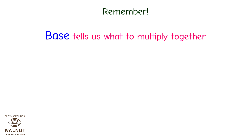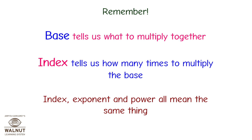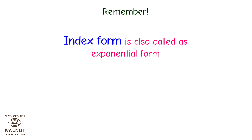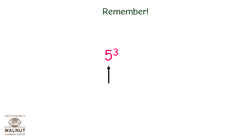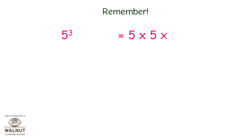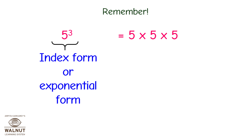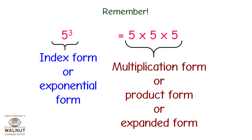Remember: base tells us what to multiply together; index tells us how many times to multiply the base. Index, exponent, and power all mean the same thing. Index form is also called exponential form. Multiplication form is also called product form or expanded form. For example, 5 raised to 3: 5 is the base, 3 is the index or exponent or power. 5 raised to 3 equals 5×5×5, where 5 raised to 3 is the index form and 5×5×5 is the multiplication form.